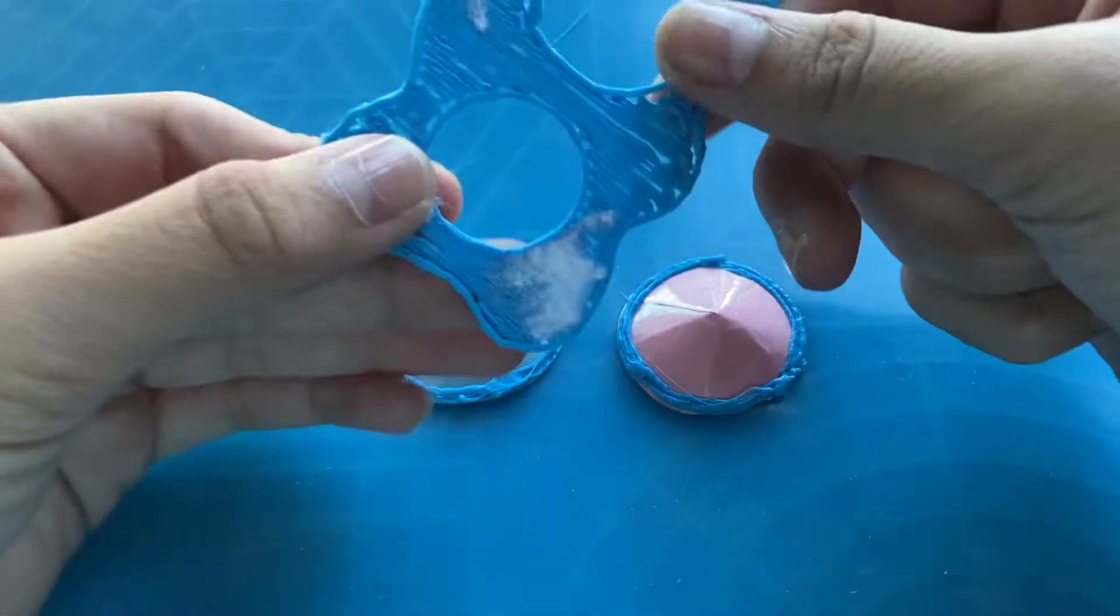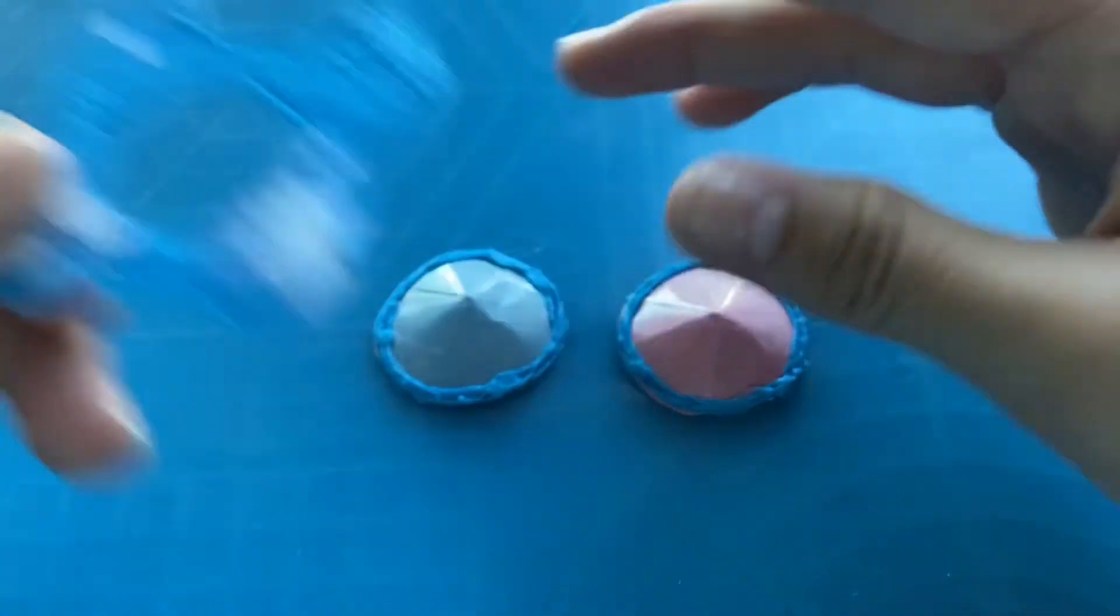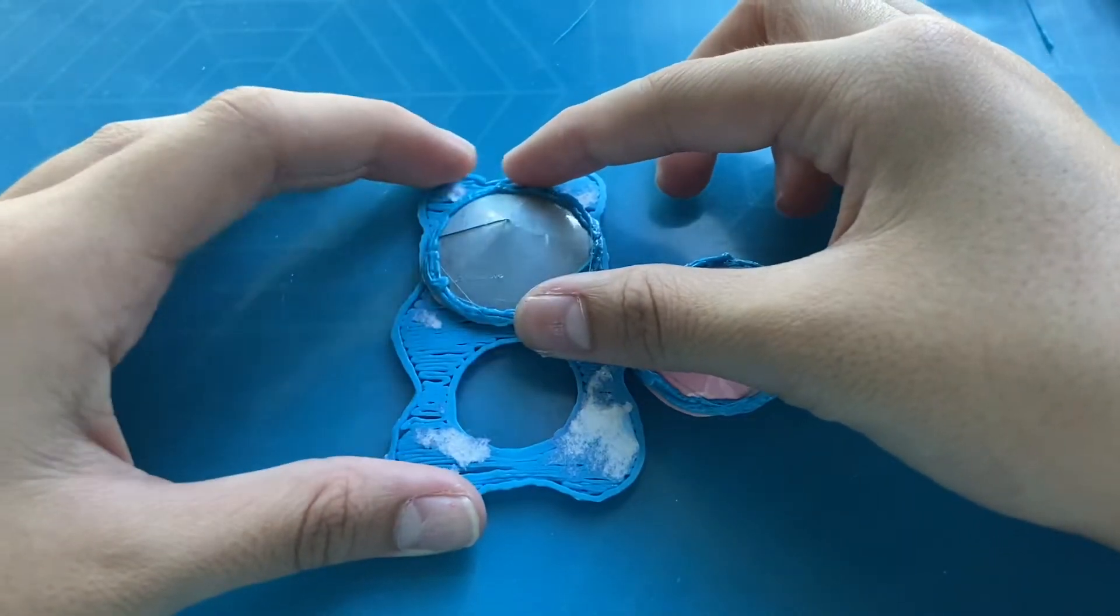You're just going to want to grab your pop-it, flip it over, and there may be some paper on it. That's okay, you won't see it. And you're going to want to place it on where you want it.